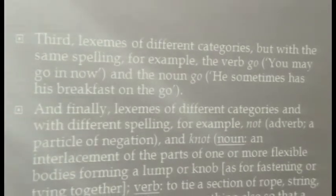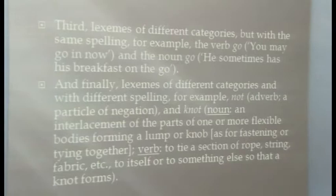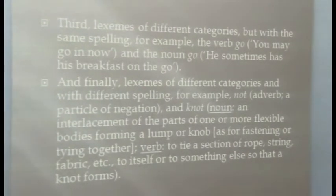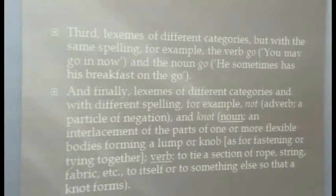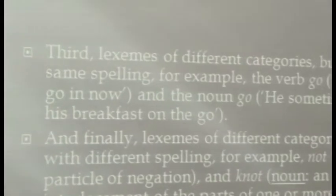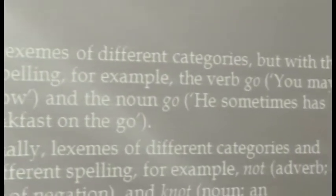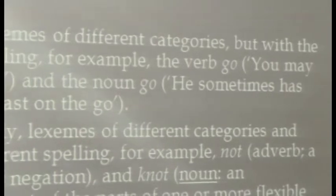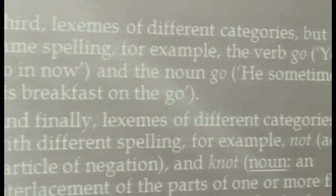The third category of homonyms in English are words of different categories but with the same spelling. Take the word 'go' (G-O), which can be used as a verb, as in 'you may go,' but there is also a second use of 'go' as a noun, as in the sentence 'you sometimes ask to eat breakfast on the go.' The key thing here is that 'go' is a homonym that can be used as both a verb and a noun.